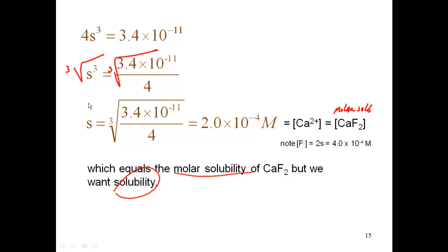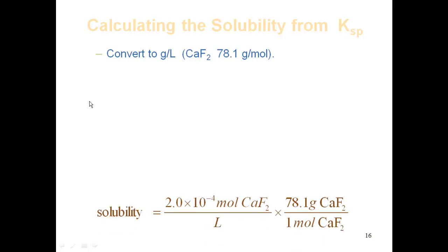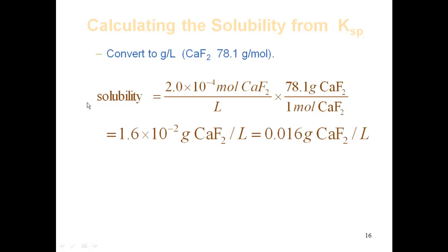To get from molar solubility to solubility, I go through molar mass. Using the molar mass of calcium fluoride as 78.1 g/mol: I have 2.0×10⁻⁴ mol/L of calcium fluoride, multiplied by 78.1 grams per mole — the moles cancel — giving me a solubility of 1.6×10⁻² grams of calcium fluoride per liter, which is the same as 0.016 grams of calcium fluoride per liter. That is my answer.